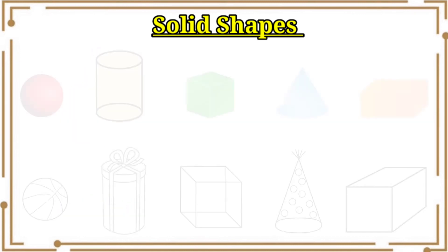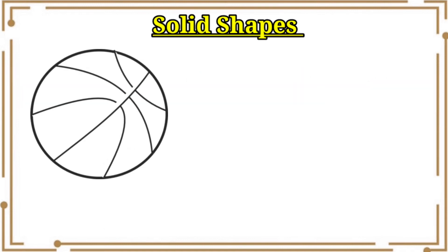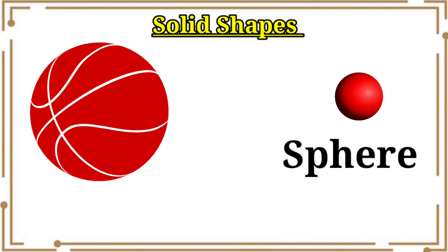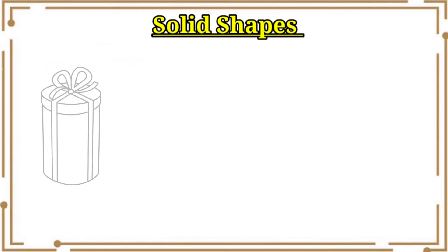Now let's color the objects below using the same colors as the solid shapes. This object name is ball. Ball is in which shape? We know that it is in sphere shape. We need to color it in red.